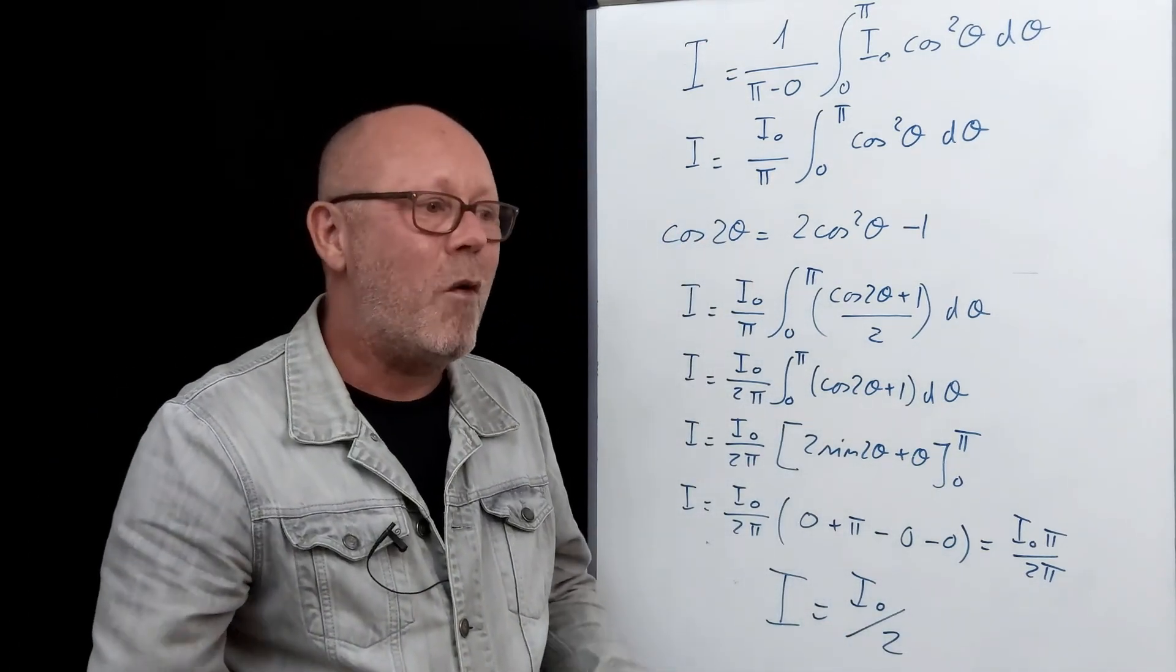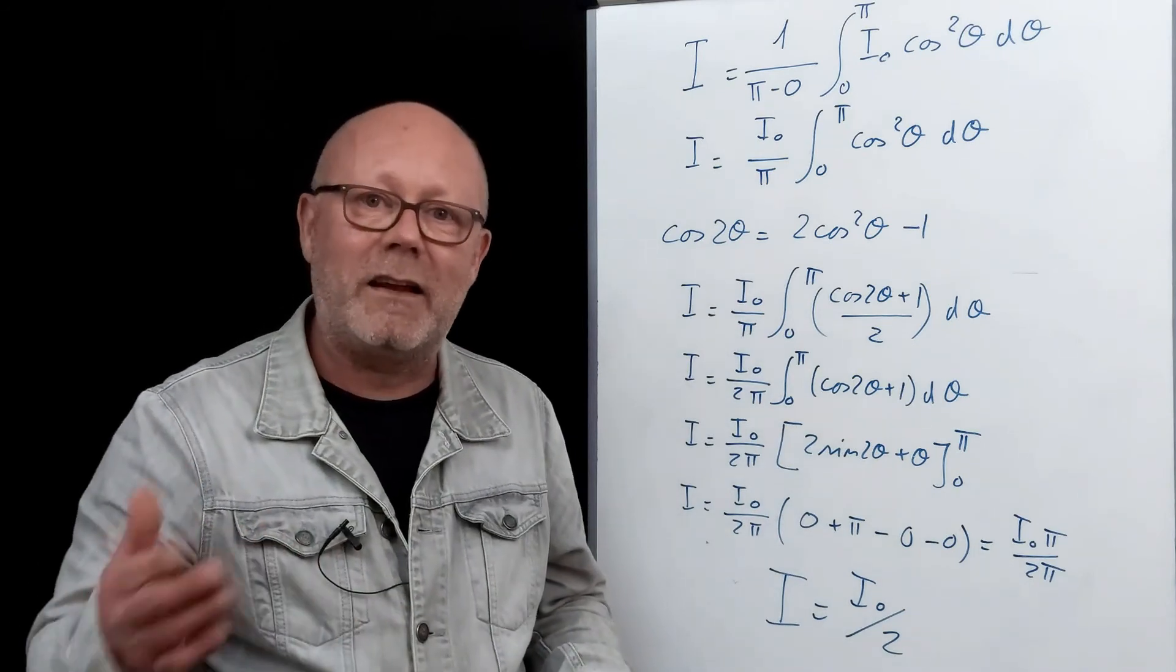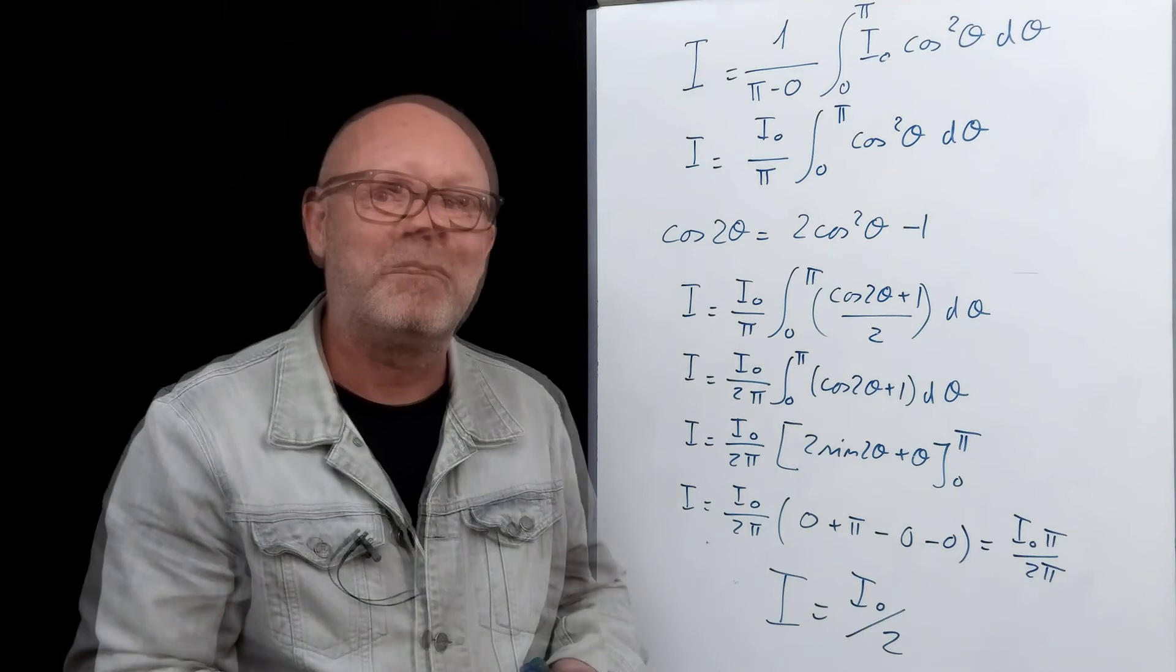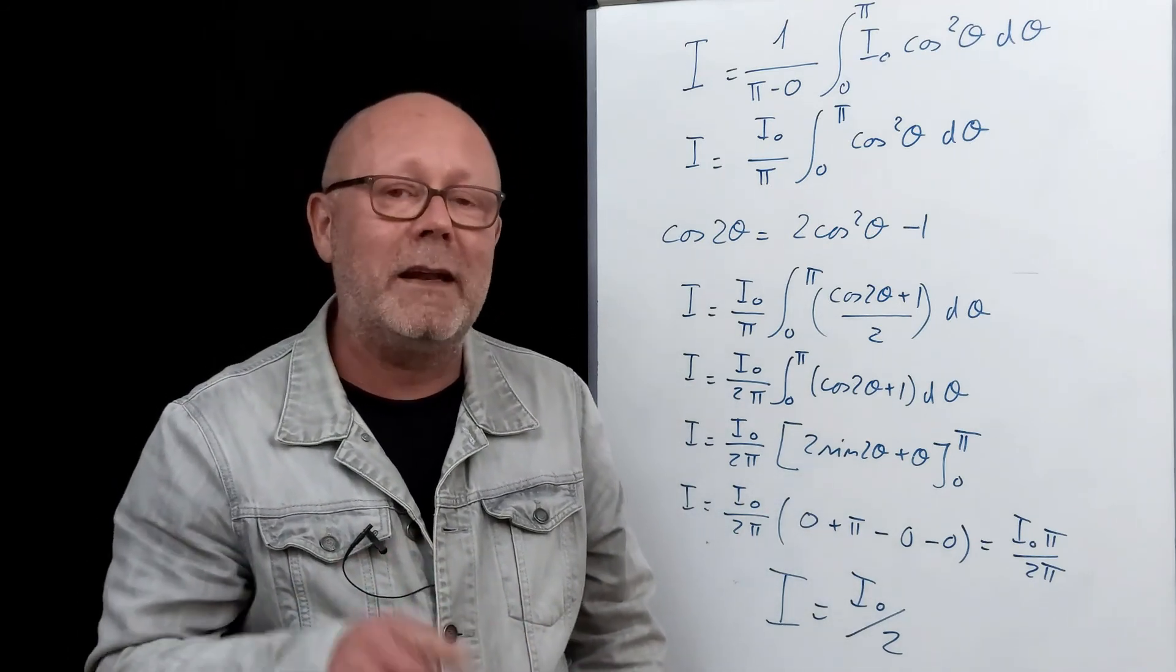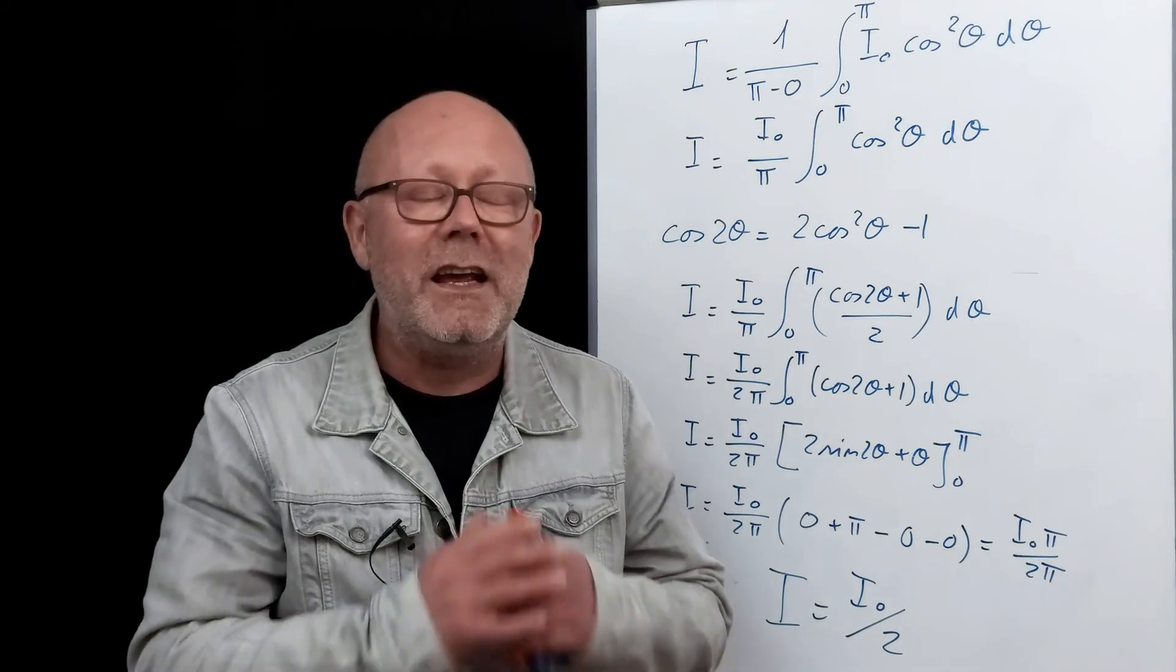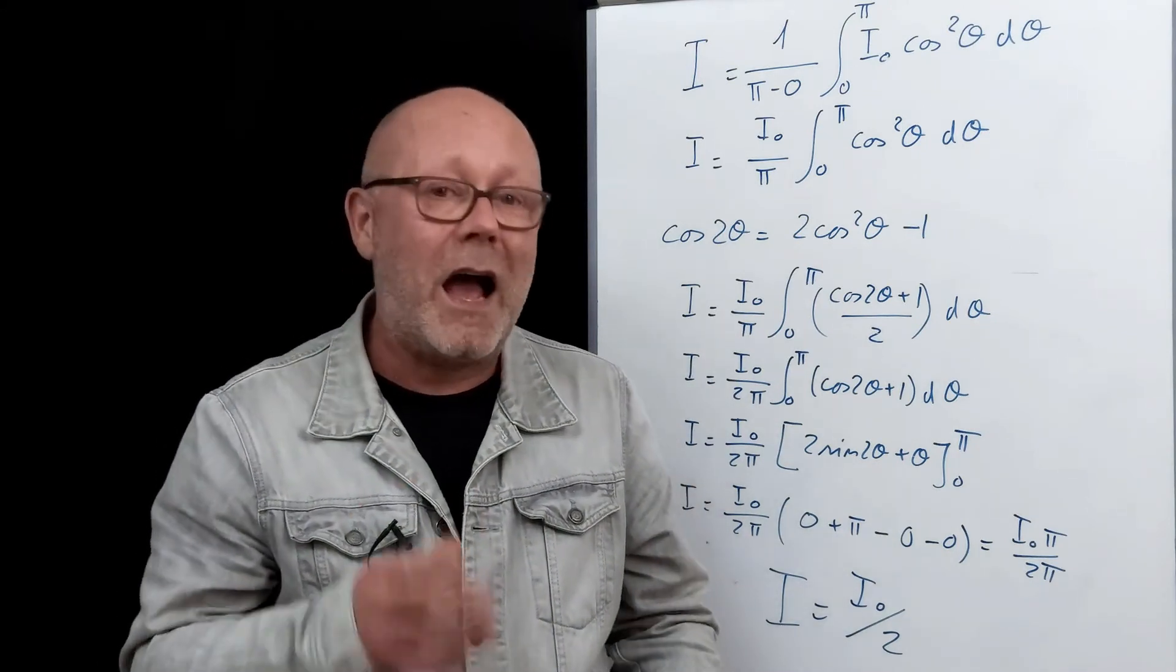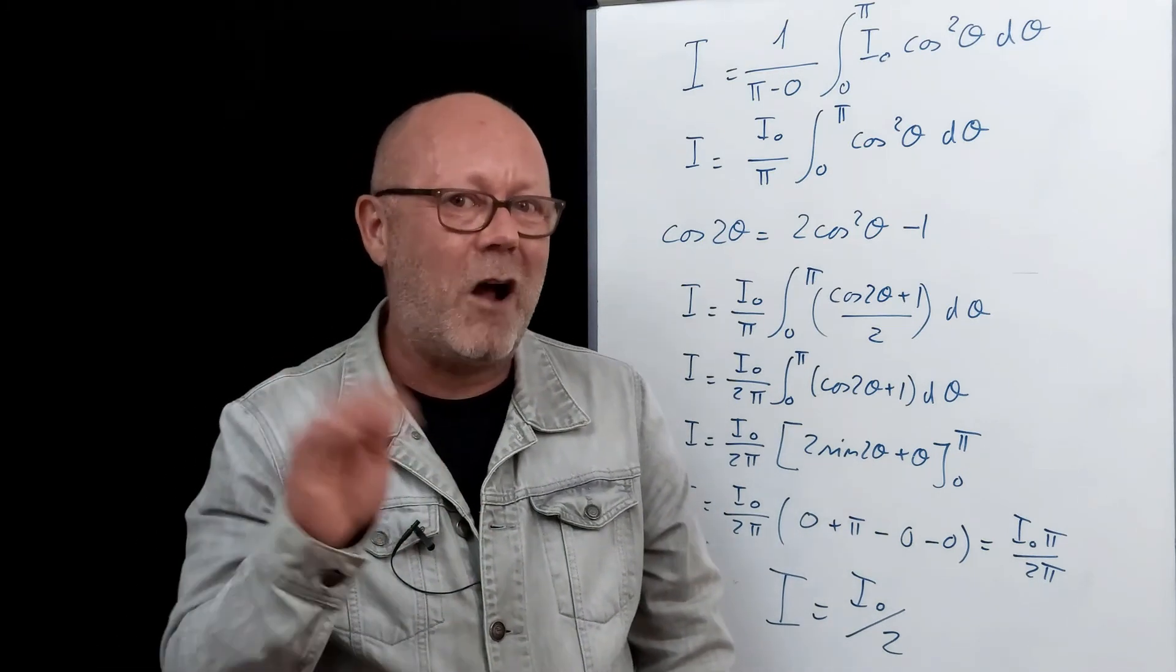So conclusion, when unpolarized light comes into a polarizer, the intensity that comes out is half of the intensity that came in. I hope you enjoyed this video, and if you did, please like, subscribe and hit the notification bell. It really encourages me to make new videos. In the meantime, I wish you the best, and I'll see you soon for the next episode of Physics Made Easy. Ciao.